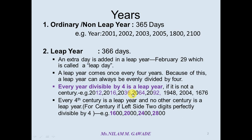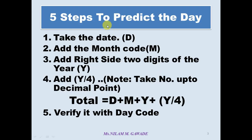Then let us see the method to calculate the day. These are the five steps to predict the day. First step is take the date, we will use notation capital D for this. Second one is add month code, we use notation capital M for this. Third step is add right two side digits of the year, we denote this by using Y. Then fourth step is add Y by four. Note, we have to take Y by four up to the decimal point. And finally, we have to find out the total. Total is equal to D plus M plus Y plus Y by four. And we will get a number and we have to verify this number with day code.